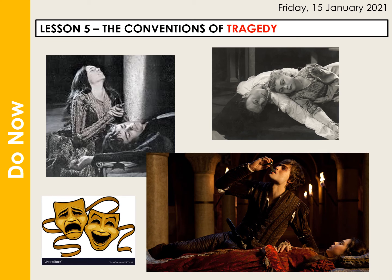Well hello Year 9 and welcome to Lesson 5. Today we're going to learn all about the conventions of a tragedy — in other words, what makes a play a tragedy as opposed to a comedy. You can see the traditional drama masks there that are laughing and crying, and tragedies are denoted by the mask that is wailing. Here you've got some different productions of the tragic end scenes of Romeo and Juliet, showing Romeo drinking the poison and Juliet stabbing herself in the vault. So very atmospheric, very emotive, and a tragedy is going to end in death.